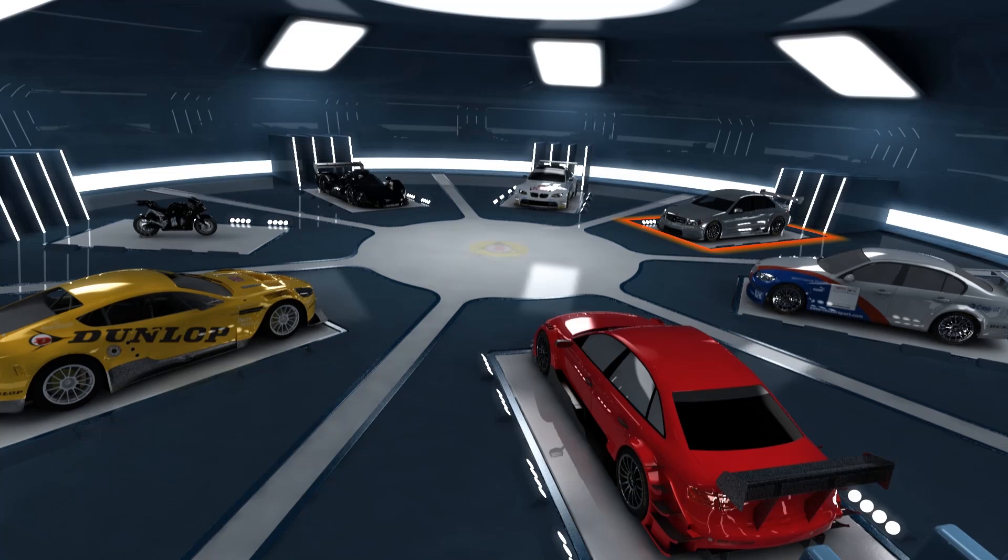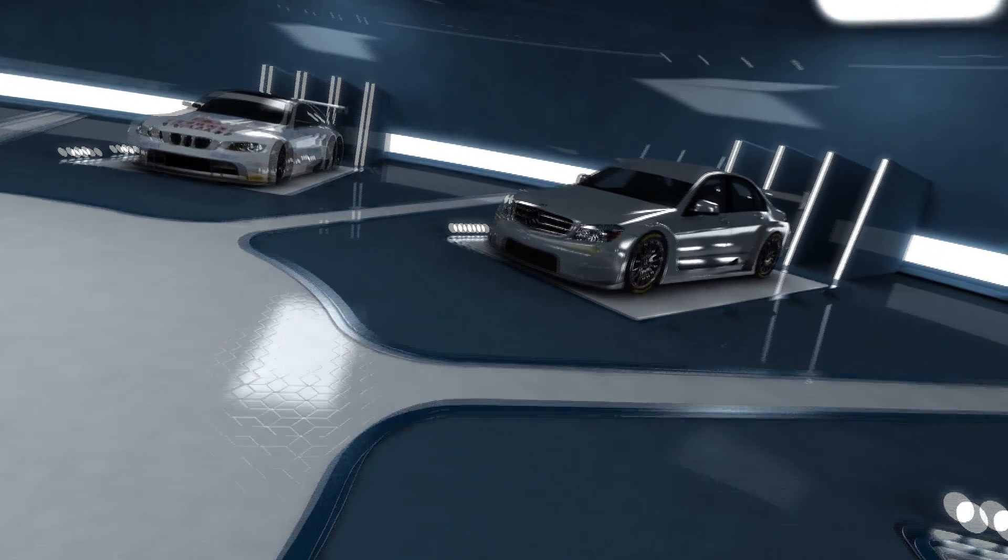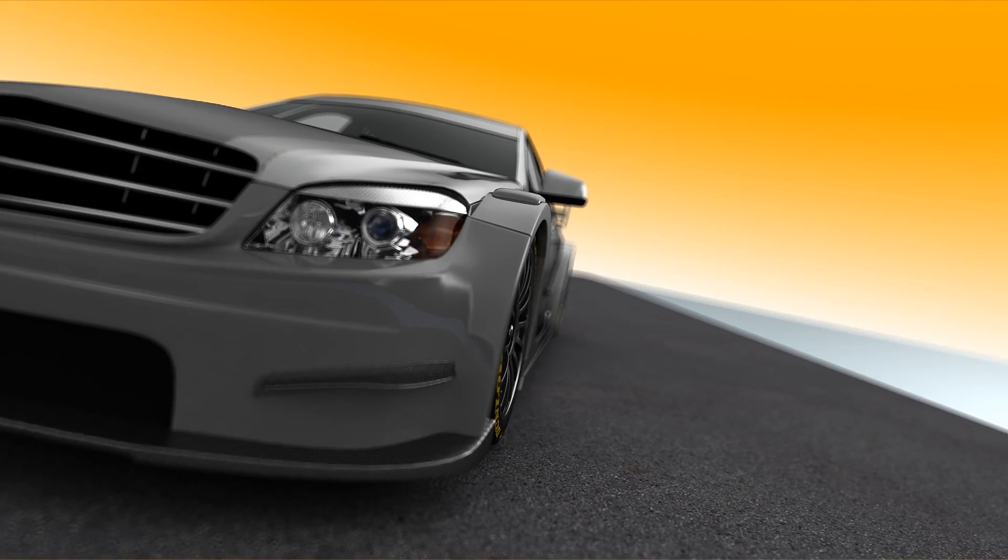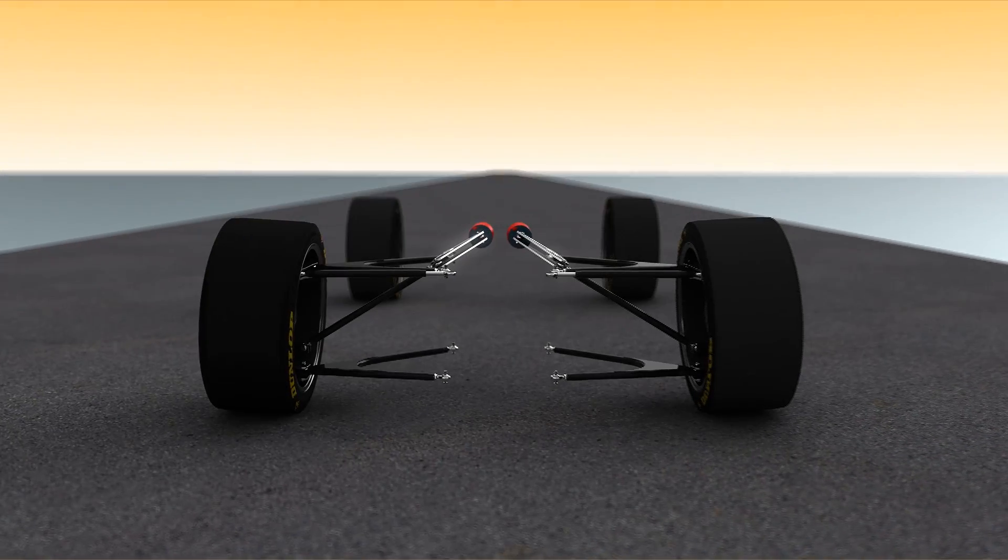Hidden beneath the low broad silhouette of a racing car lies highly complex chassis suspension technology. It's this that makes it possible at all to keep the tires on the ground under extreme race conditions.